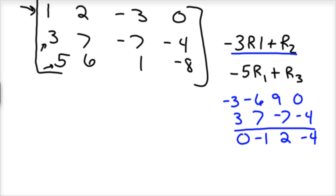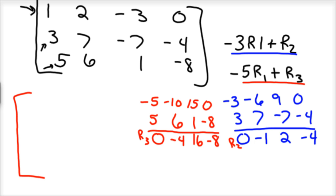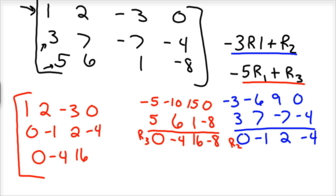Now with row 1 and row 3: take negative 5 times row 1, which is negative 5, negative 10, 15, 0. Add that to row 3 (5, 6, 1, negative 8) and you get 0, negative 4, 16, negative 8. So my new matrix is: 1, 2, negative 3, 0; 0, negative 1, 2, negative 4; and 0, negative 4, 16, negative 8.